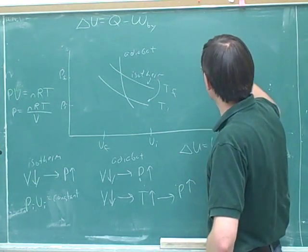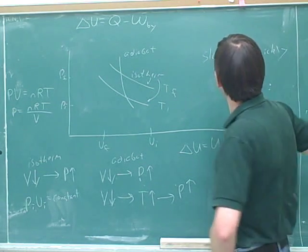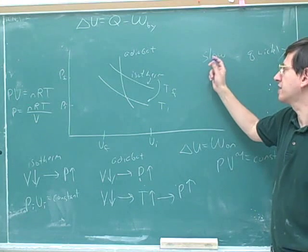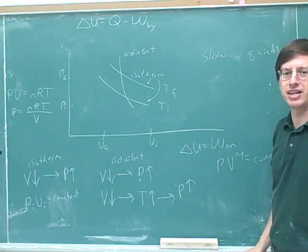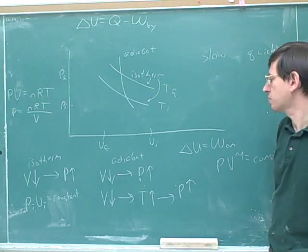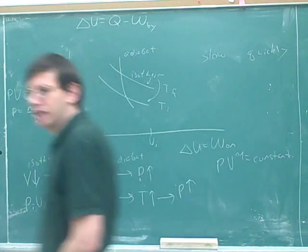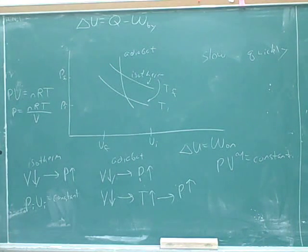We can imagine doing a process very slowly or very quickly. Now, it turns out that one of these tends to be isothermal and one tends to be adiabatic. So let's take a second to figure out who goes with whom. Would we expect that a slow process would be adiabatic or isothermal, or would we expect that a quick process would be isothermal or adiabatic? Who goes with who here?